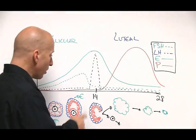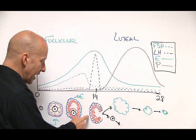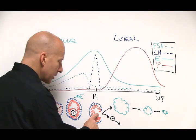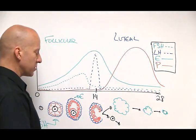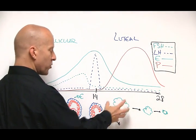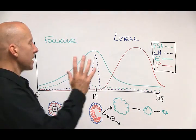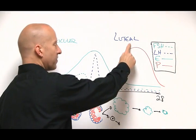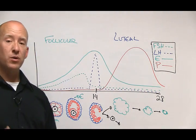Now, luteinizing hormone stimulates this now-mature follicle to release the ovum, which will now go into the fallopian tubes, and then this cellular material, what's left over, forms what's called the corpus luteum. Hence, the second half of the phase of the monthly cycle is called the luteal phase.